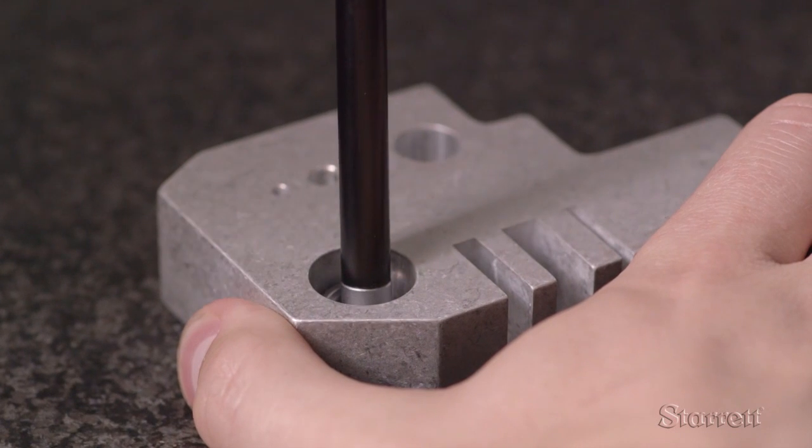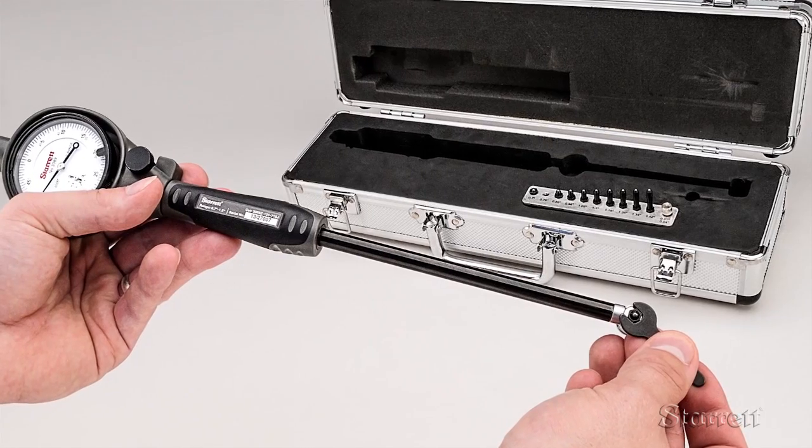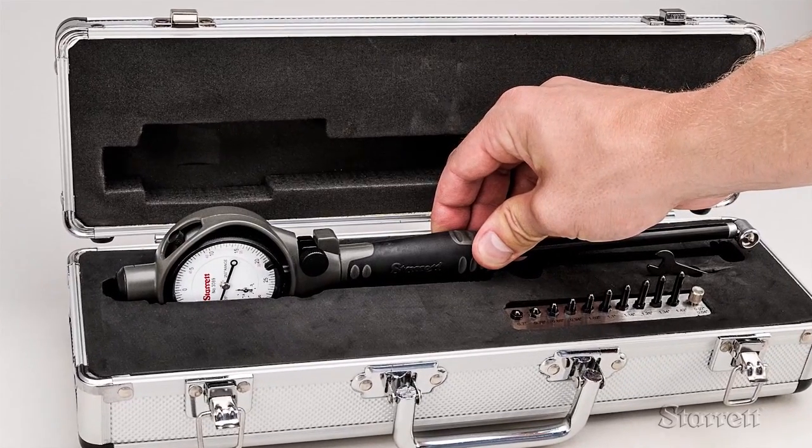Now rock the gauge back at an angle and carefully withdraw it from the hole. Disassemble the 0.7 anvil and spacers from the gauge and put them back into their proper places.